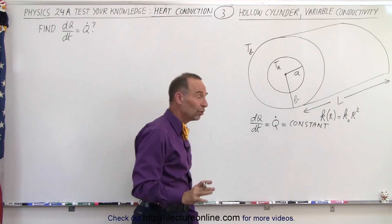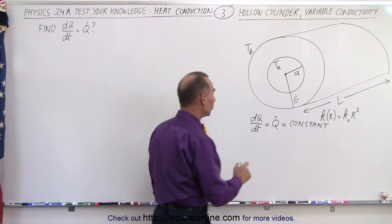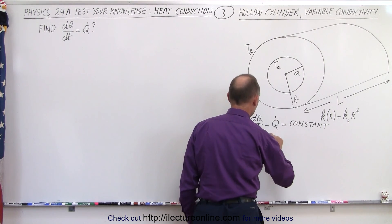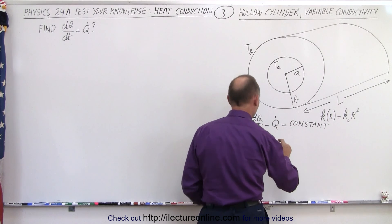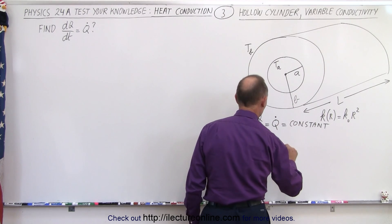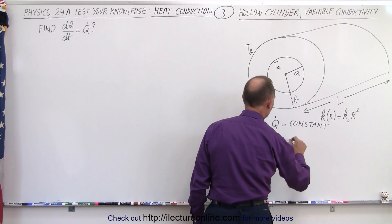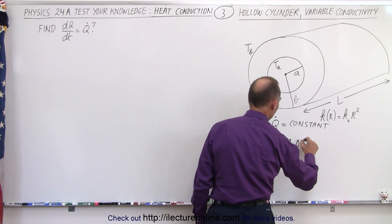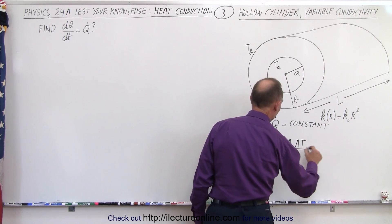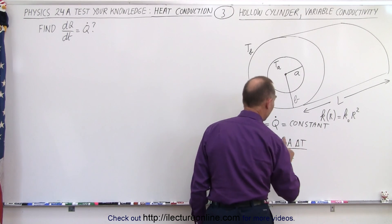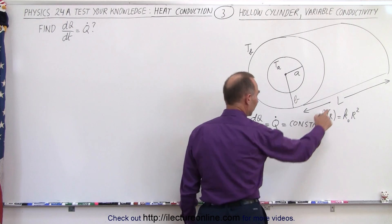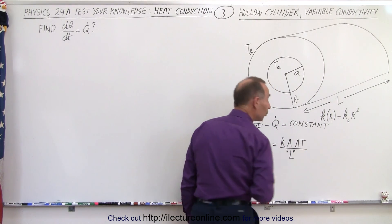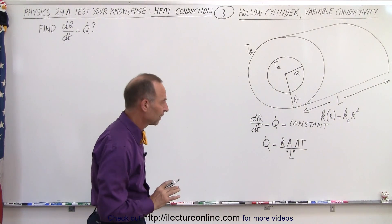So now, using the conductivity equation, we can say that Q-dot — the heat flowing from the inside to the outside — is equal to K times the cross-sectional area times the difference in the temperature divided by the length of the path. Now be careful that this length is not the same as the cylinder length L, so I'll put little quotation marks around that.